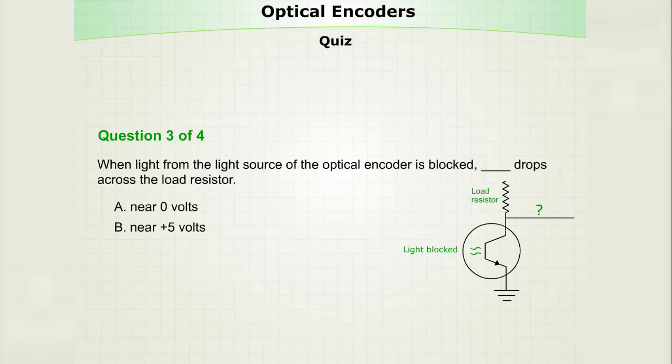When light from the light source of the optical encoder is blocked, what drops across the load resistor? A, near zero volts, or B, positive five volts? The answer is A, near zero volts.